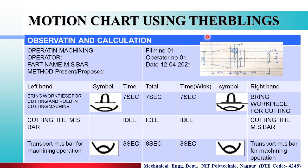Now we see the Motion Chart using Therblig symbols. This is the Observation and Calculation section. First, the operation is a Machining Operation. यहाँ पर लिखना पड़ता है Operator का Name, then Part Name, then Method — Present and Proposed — then Film Number, आप video shooting जो ले रहे हैं while drawing the motion chart, वो कुन से number की ले रहे हैं? Then Operator Number और Date.